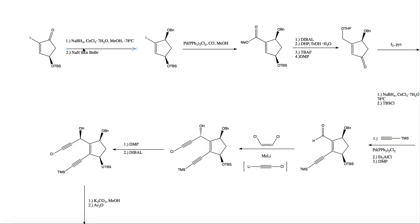So the first step is a sodium borohydride reduction with Lewis acid catalyst to give a stereoselective reduction to this alcohol here, which then can be deprotonated in the presence of benzyl bromide to give the benzyl-protected alcohol here.